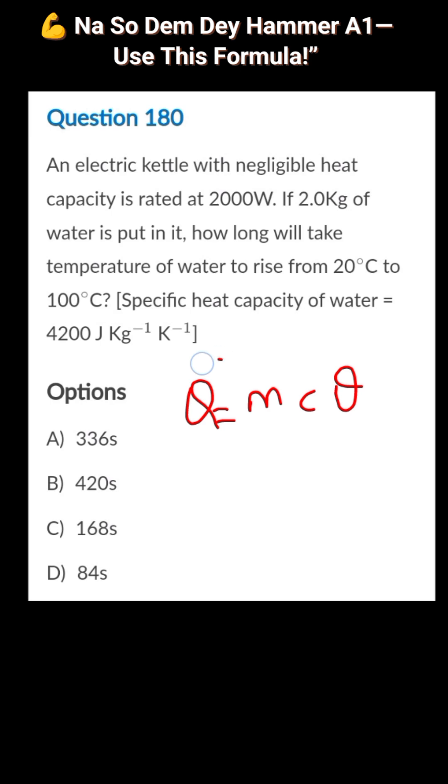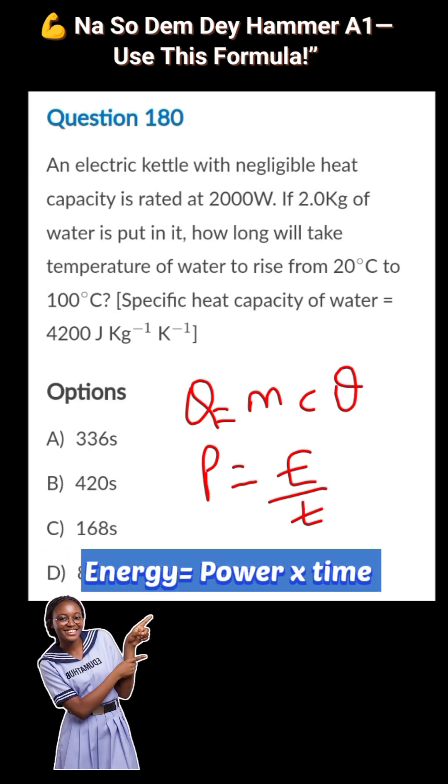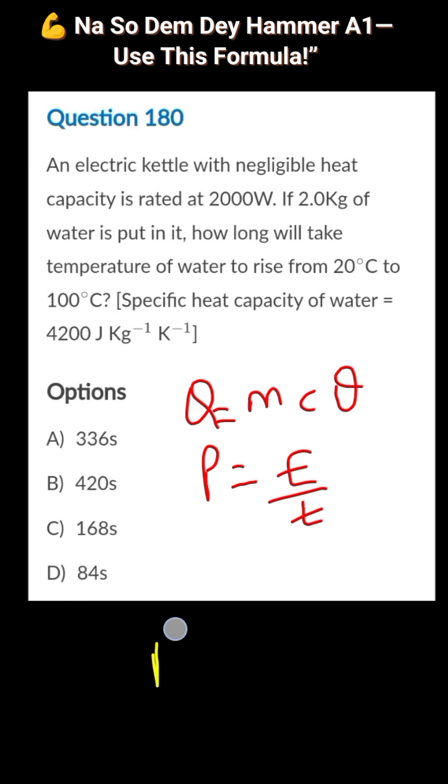Since this energy you can relate to power, you already know that power equals energy over time. So this energy here, which is the same thing as this Q, instead of writing Q here you can just write P times t, because energy equals power times time.